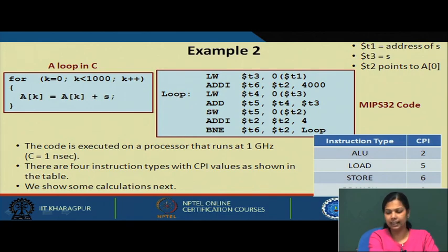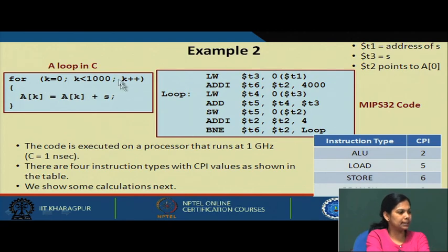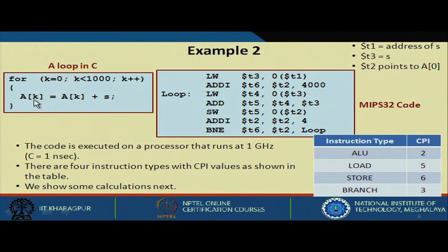Now let us take another example. We have a C loop: for k = 0; k < 1000; k++, we are adding a constant value stored in variable s to array element a[k] and storing it back. Let us write the assembly language code for this C code segment.